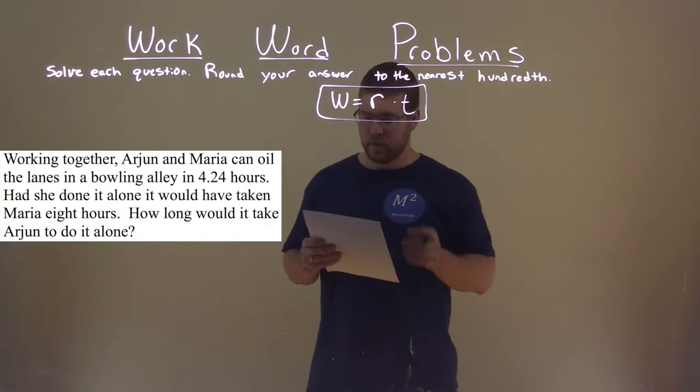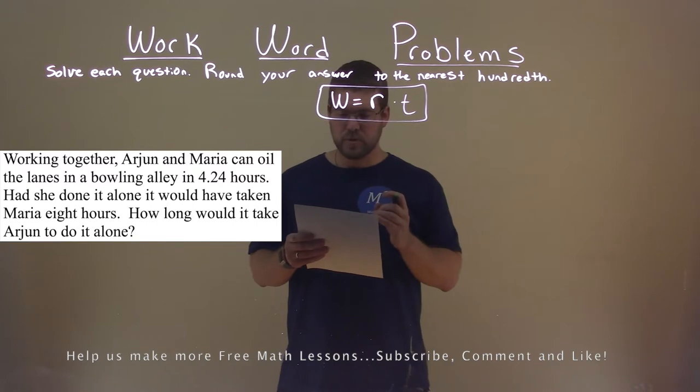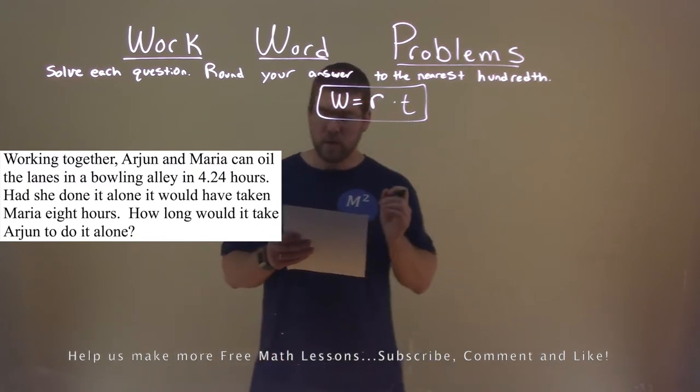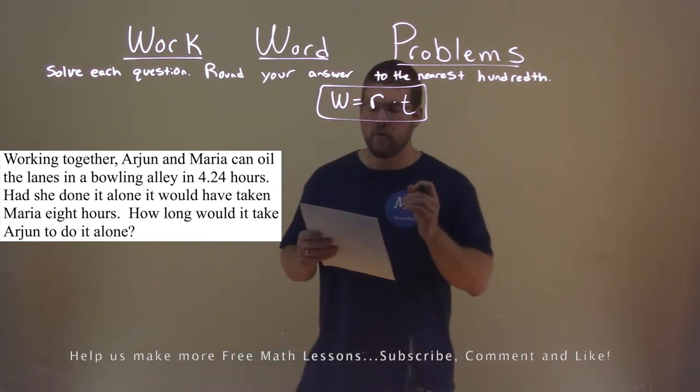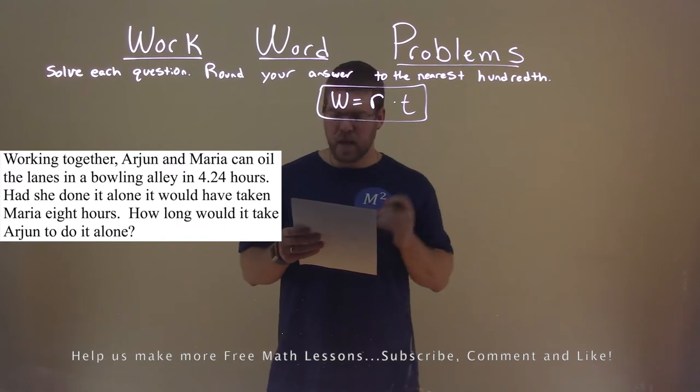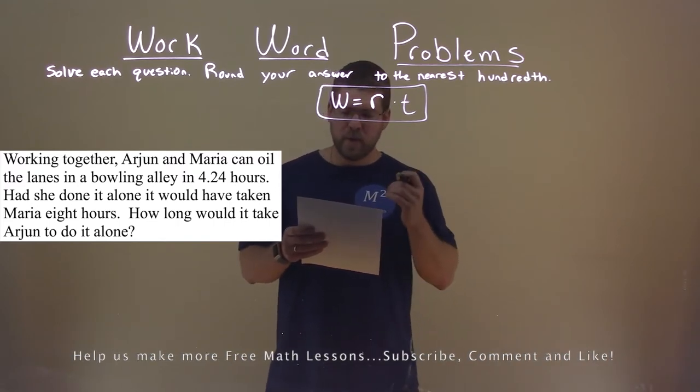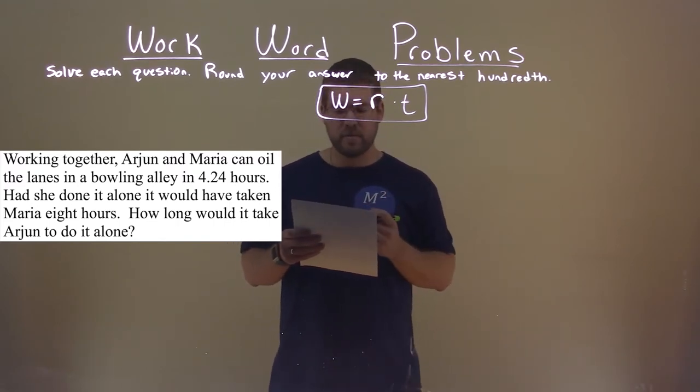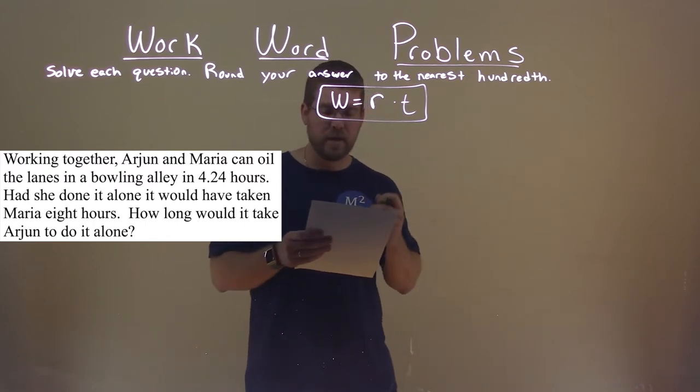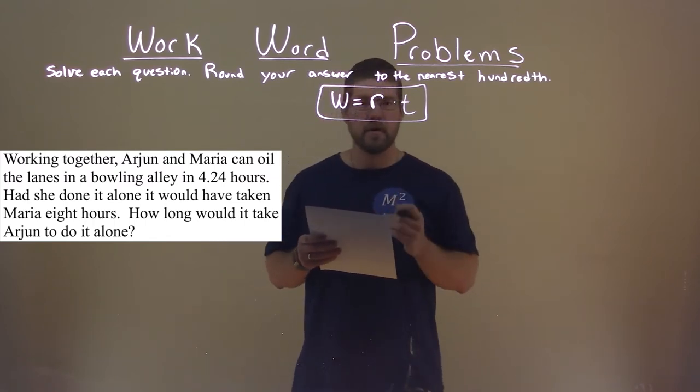We're given this problem right here. Working together, Arjun and Maria can oil the lanes in a bowling alley in 4.24 hours. Had she done it alone, it would have taken Maria 8 hours. How long would it take Arjun to do it alone?